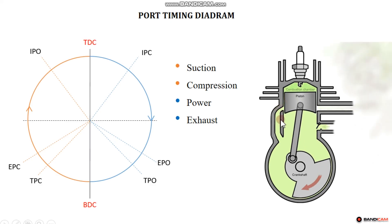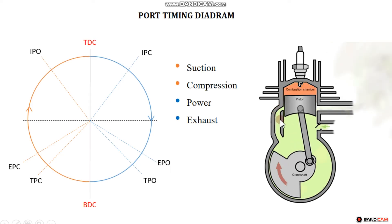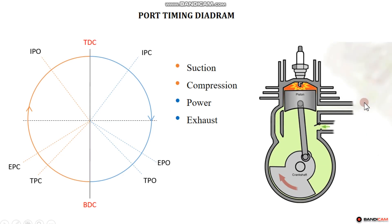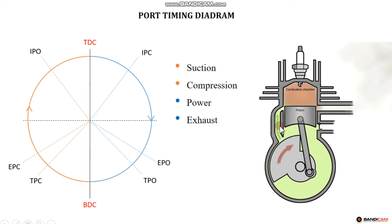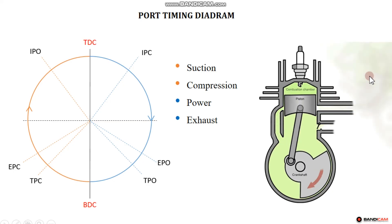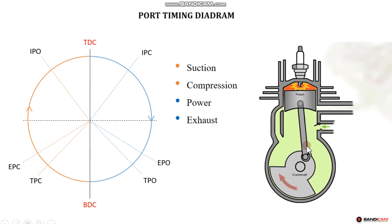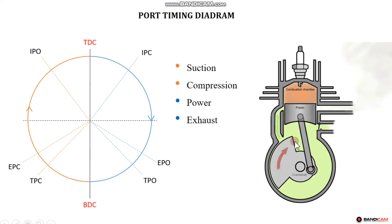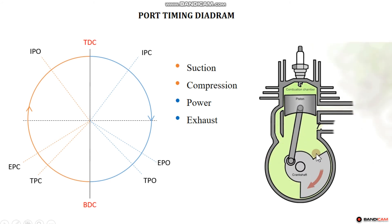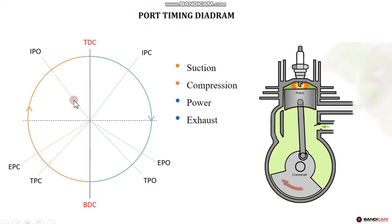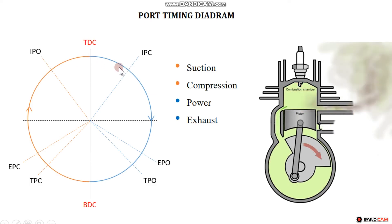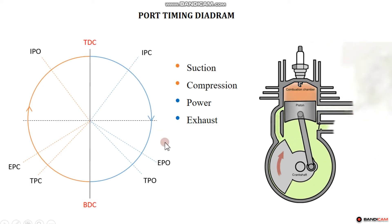Scavenging has a limitation — the pressure is less than required. That is a limitation of the two-stroke engine. The fuel consumption is affected: if the pressure is lower, then automatically the fuel consumption increases and some fuel goes into the exhaust pipelines.